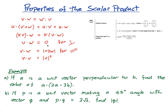v dot w equals zero for perpendicular vectors — this is my perpendicular sign — so when they're perpendicular, the dot product equals zero. When they're parallel, the dot product of v and w equals the product of the magnitudes of the vectors.